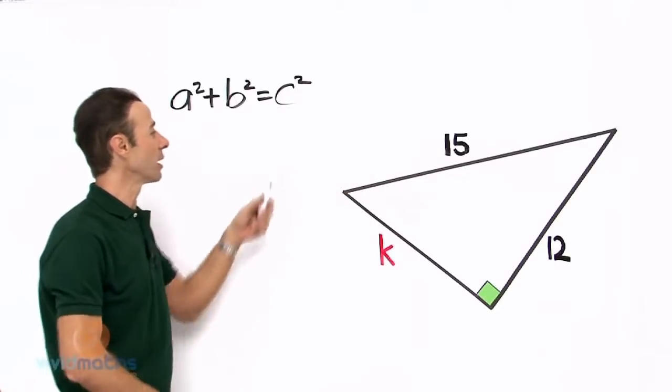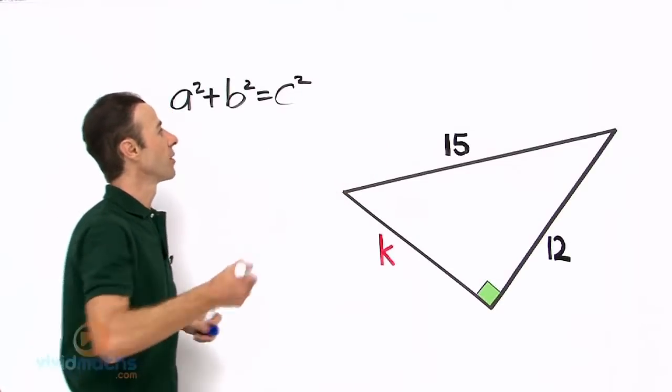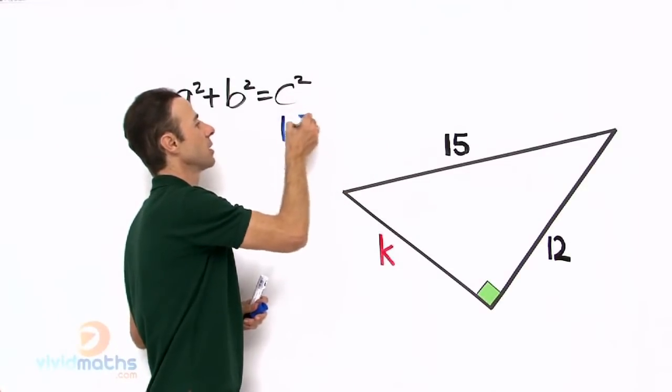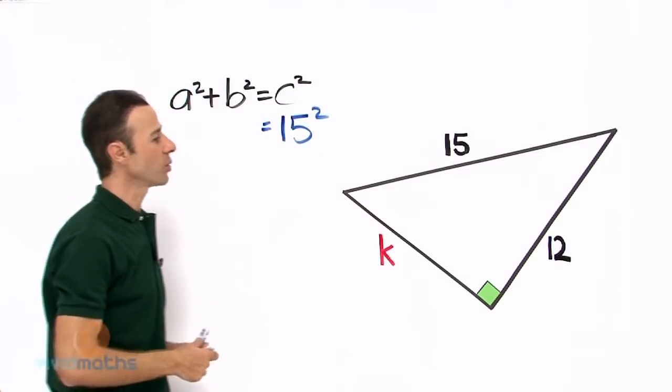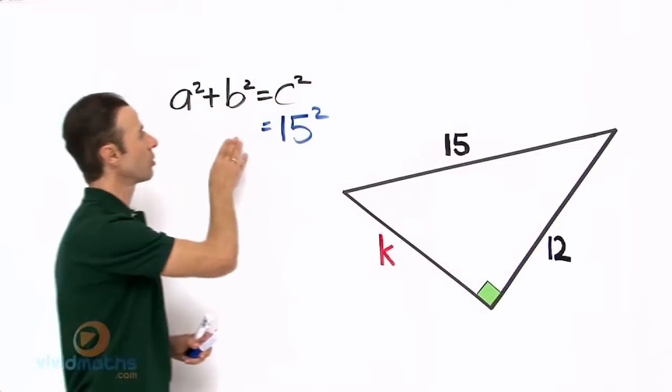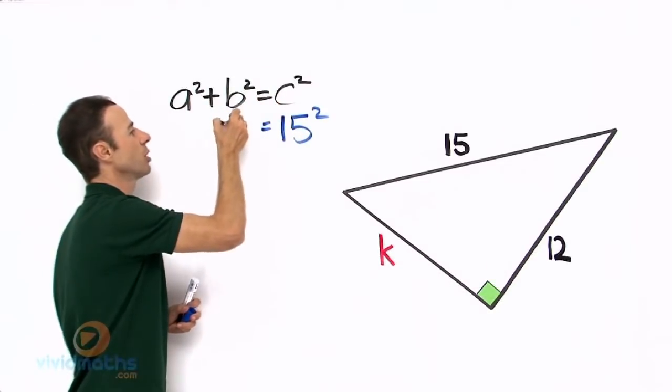Let's take that 15 and put it in right here, so that becomes 15² right there. Then we take the b² from over there and bring it across here, so that's going to be 12².